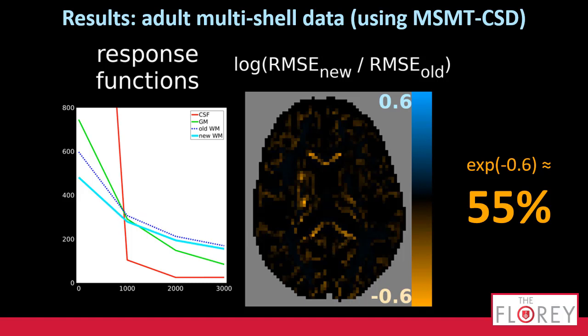If we then perform multi-shell multi-tissue CSD on the result using the old and the new method, and we look at the root mean square error of the new one versus the old one — fraction log of that — orange means win. We see that it improves in a lot of the voxels of the brain. And in the voxels where it improves the most, the root mean square error is decreased up to 55%, so about a factor of two.